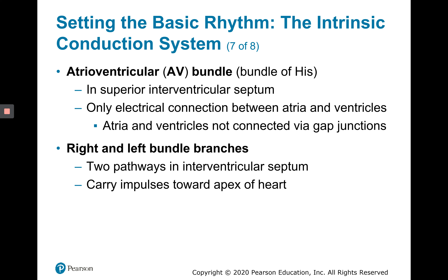Then the signal travels to the AV bundle, or bundle of His, and then to the right and left bundle branches. The bundle of His is located in the superior interventricular septum and is the only electrical connection between the atria and the ventricles. Otherwise, the atria and ventricles are not connected via gap junctions. Major issues can occur if there are problems with the AV bundle. From the bundle of His, the signal moves into the right and left bundle branches — two pathways heading toward the apex within the interventricular septum.